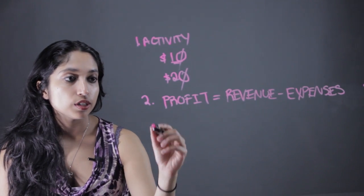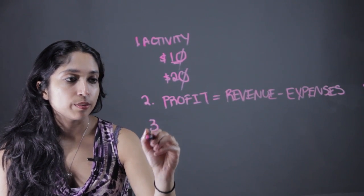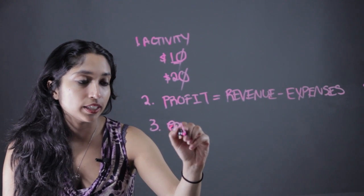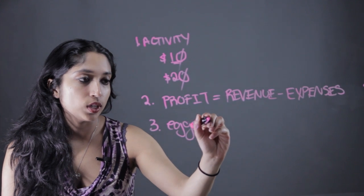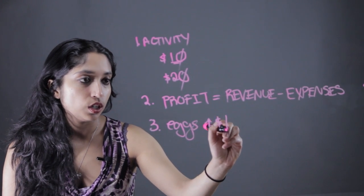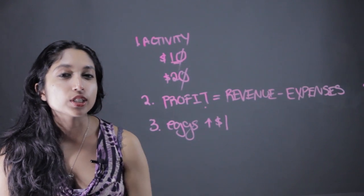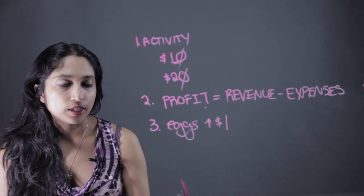And then from there you can change different variables, alter this equation. Like if the price of eggs increases by $1, what does that mean for my profit? Just bring it back to that initial activity.